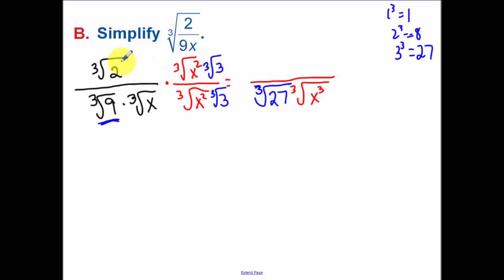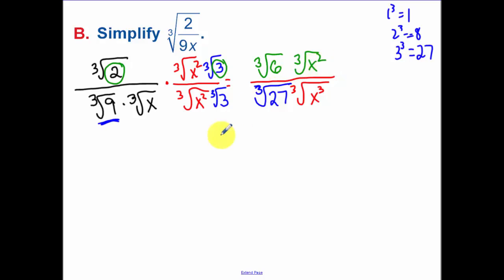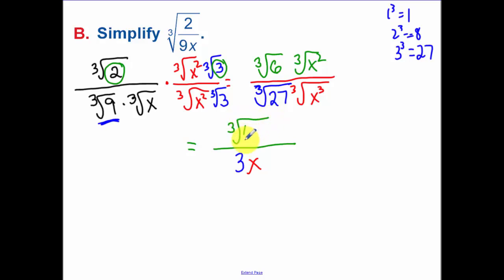So let's look at what the top's going to become. The numbers can combine and be multiplied together, and there are no variables to combine with, so it's just the cube root of x squared. Then on the bottom, the cube root of twenty-seven turns into a three, the cube root of x cubed turns into an x. And on the top, since those are the same root, we can combine those under one radical.